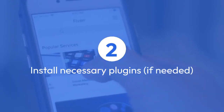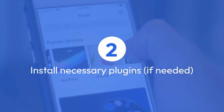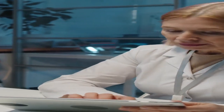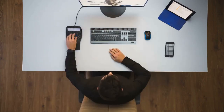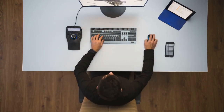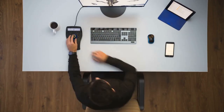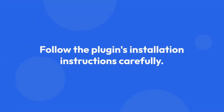Step 2: Install necessary plugins, if needed. For Blender, you will require a plugin specifically designed to import U-asset files. Search for and install a reputable U-asset importer plugin within Blender's Add-in Manager. Follow the plugin's installation instructions carefully. This step isn't always necessary, depending on your chosen converter.